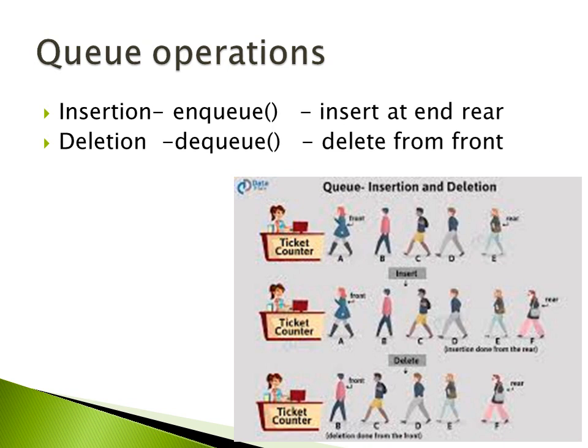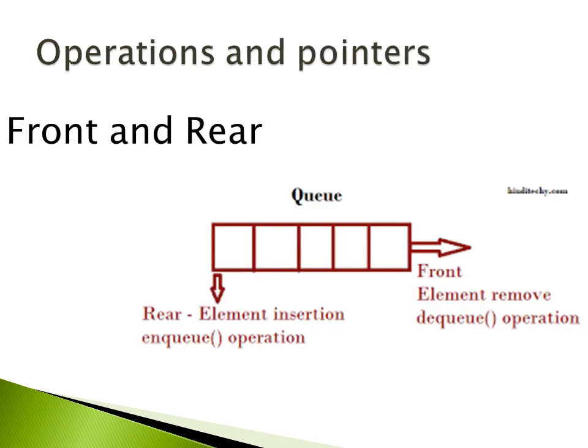The next person near the ticket counter is referred to by the front pointer, and the last person in the queue is always pointed to by the rear pointer. Any new person joining the queue is also pointed to by the rear. A queue has two operations: insertion and deletion. This diagram shows two pointers — rear and front. Elements are removed via the dequeue operation from the front, and new elements are inserted via the enqueue operation.